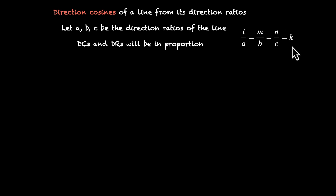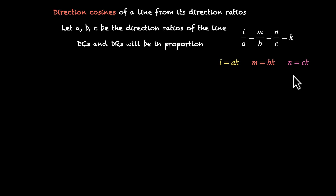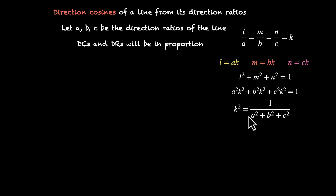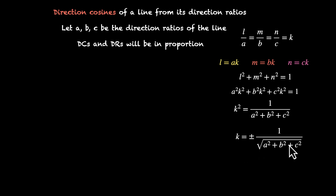We can figure this constant out. L becomes AK, M becomes BK and N becomes CK. Now we have a special relationship between L, M and N — if we add their squares we get 1. So L² + M² + N² = 1, which means A²K² + B²K² + C²K² = 1. This gives us K² = 1/(A² + B² + C²), or K = ±1/√(A² + B² + C²).